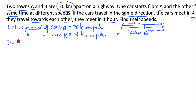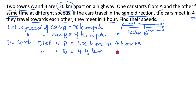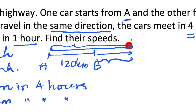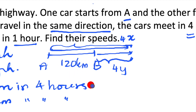Distance equals speed multiplied by time. So the distance of car A in four hours is 4x kilometers, and the distance of car B in four hours is 4y kilometers — because the speed of car B is y kmph, so in four hours it travels 4y kilometers. The distance 4y is bigger than 4x by 120 kilometers.